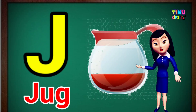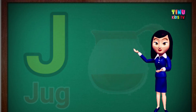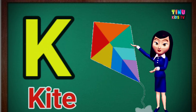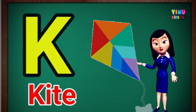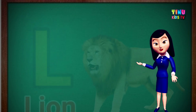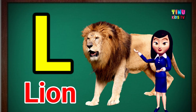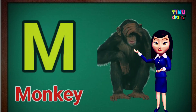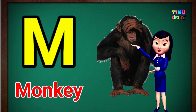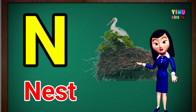J for Jug. K for Kite. L for Lion. M for Monkey. N for Nest.